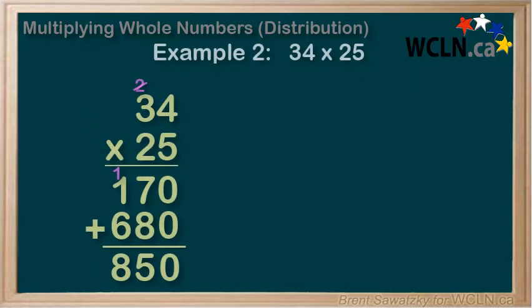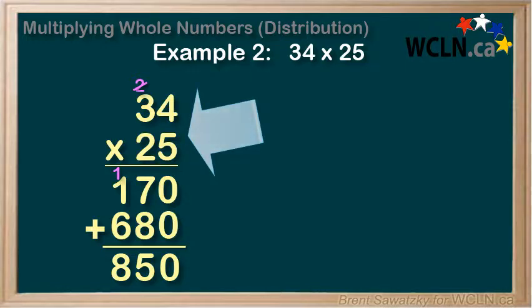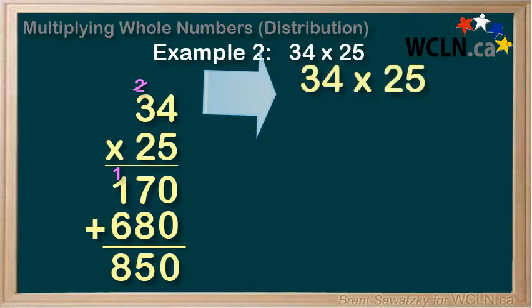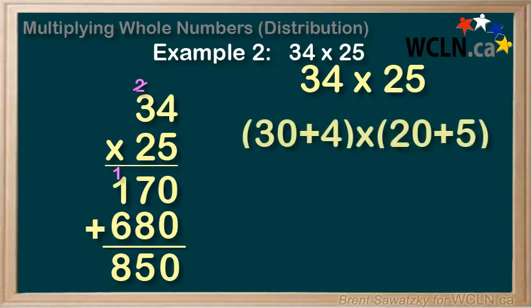Example 2: 34 times 25. This is the way we've done it in the past. And this is our distribution method. In this case, we have two multi-digit numbers, so we'll break them both down into their parts.